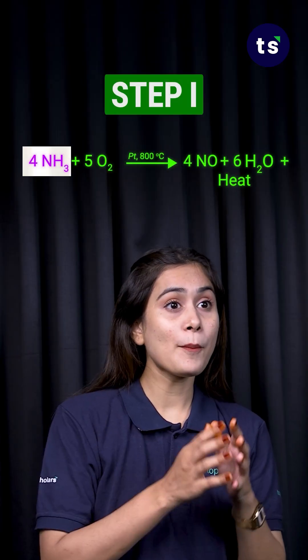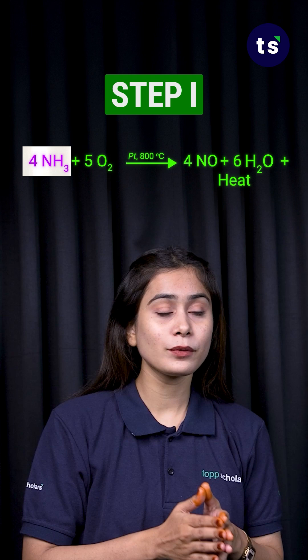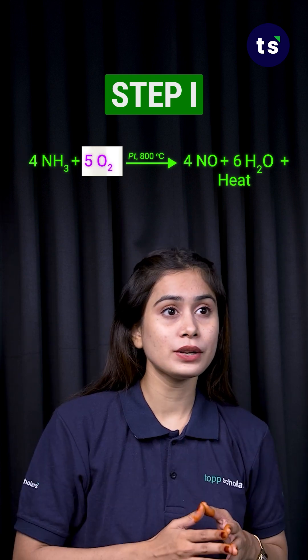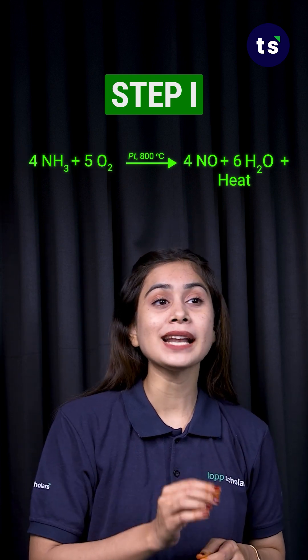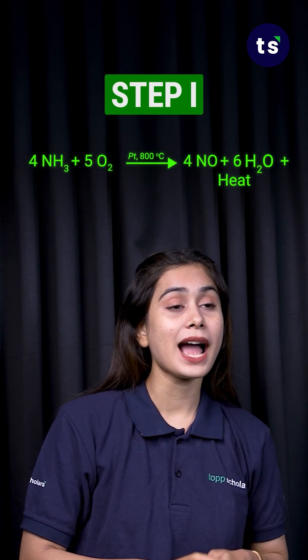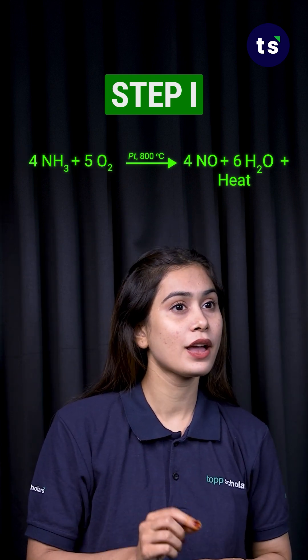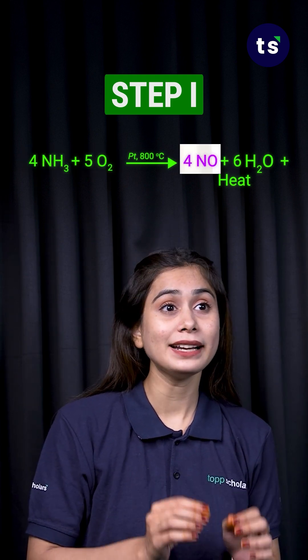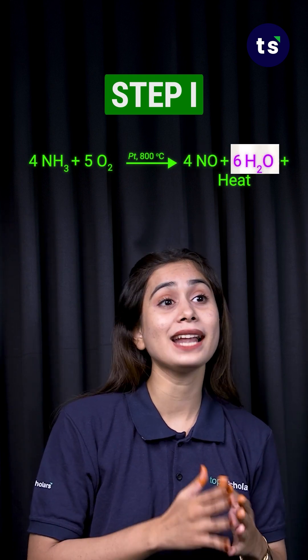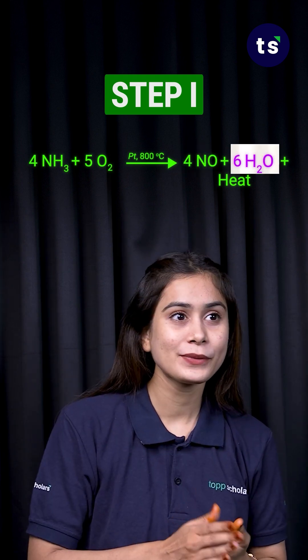Step 1: Ammonia reacts with oxygen over a platinum catalyst at 800 degrees Celsius, forming nitric oxide (NO) and steam.